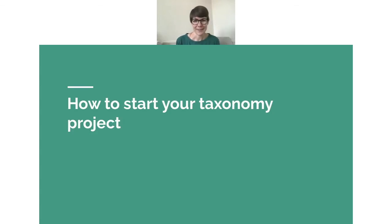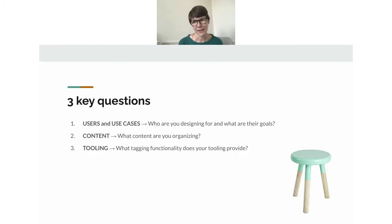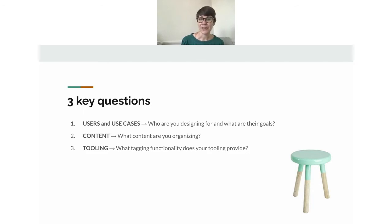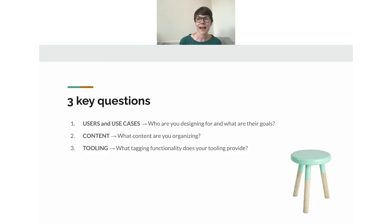How do you get started with your own taxonomy project? There are three key questions to ask at the beginning. The first is around users and use cases — who are you designing for and what are they trying to do? The second is getting to know your content. The third is getting to know your tool, because different tools have different tagging functionality that influences your design. I think of these as the three legs of the taxonomy project stool — without all three, your project risks not succeeding.